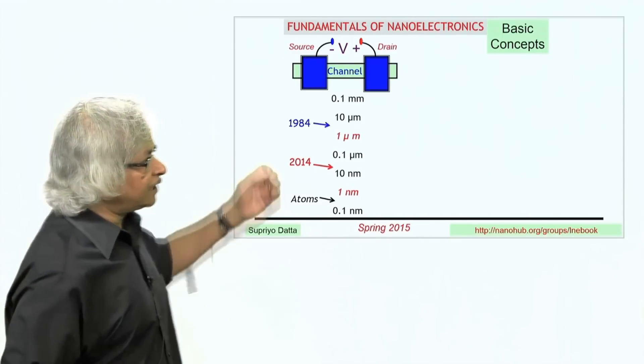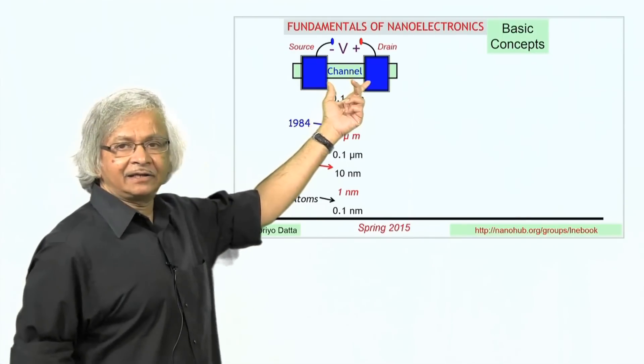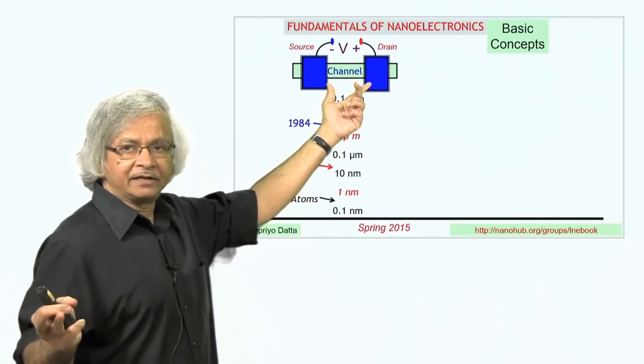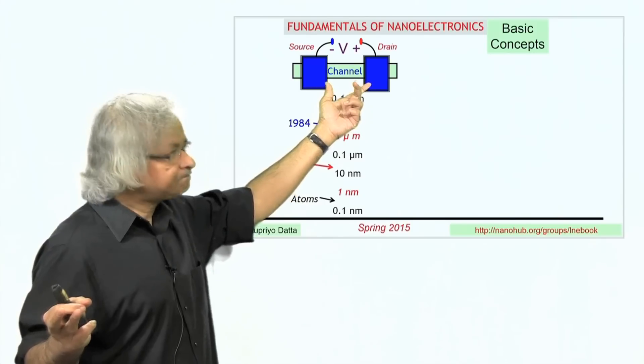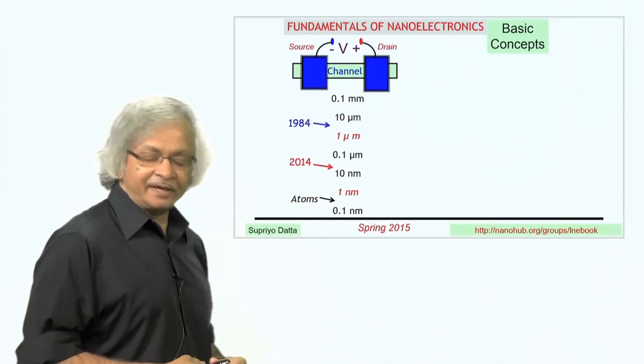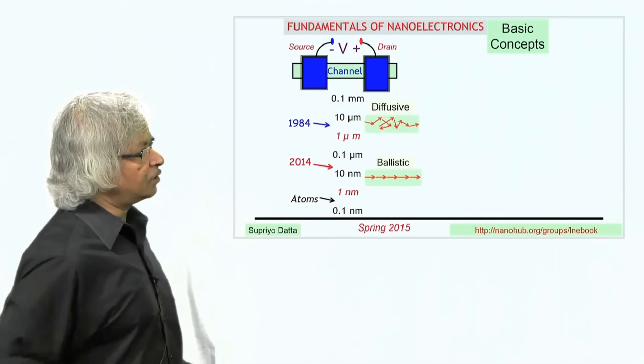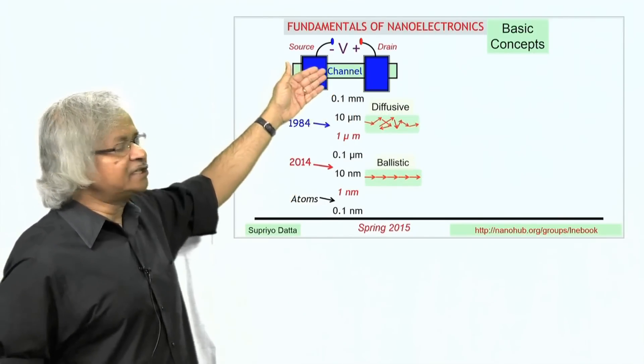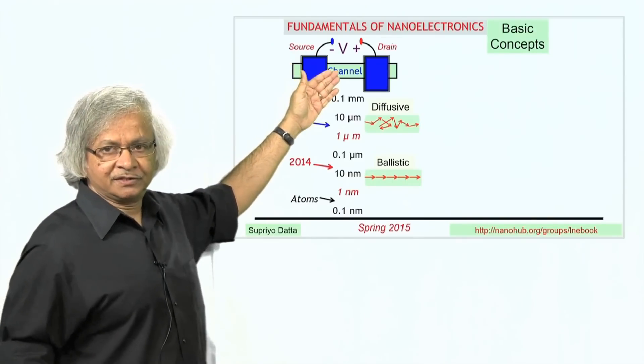If you look at today's transistors and you looked at the active region, it's like a few hundred atoms across. Now in the process of making it small, one thing that has also changed is the nature of current flow through these devices.